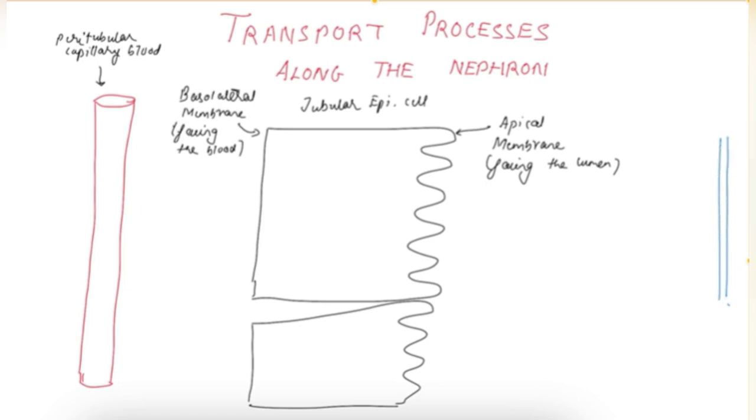This blue arrow shows fluid flowing in the lumen of the tubule.